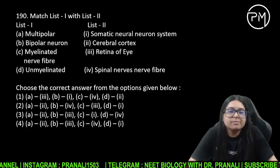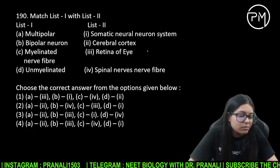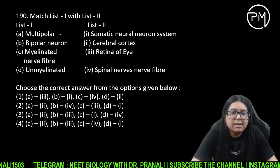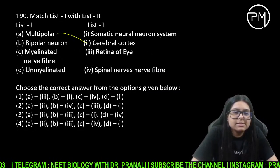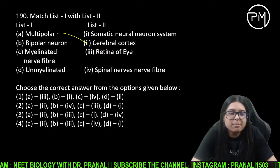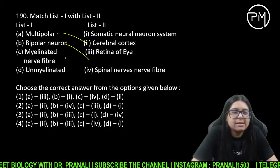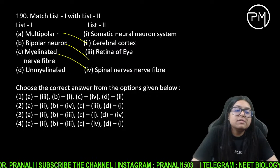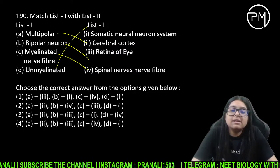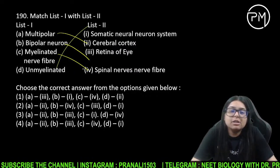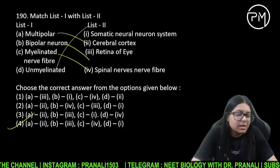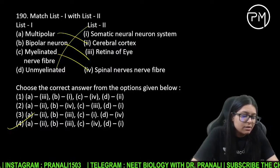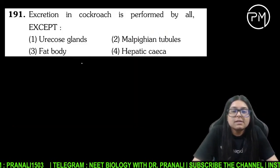189 ka answer 2. Question 190 — match the following: multipolar — cerebral cortex mein. Bipolar — eye ke retina mein. Myelinated — spinal nerves. Unmyelinated — somatic neural nervous system. 190 ka answer 4 ho jayega.